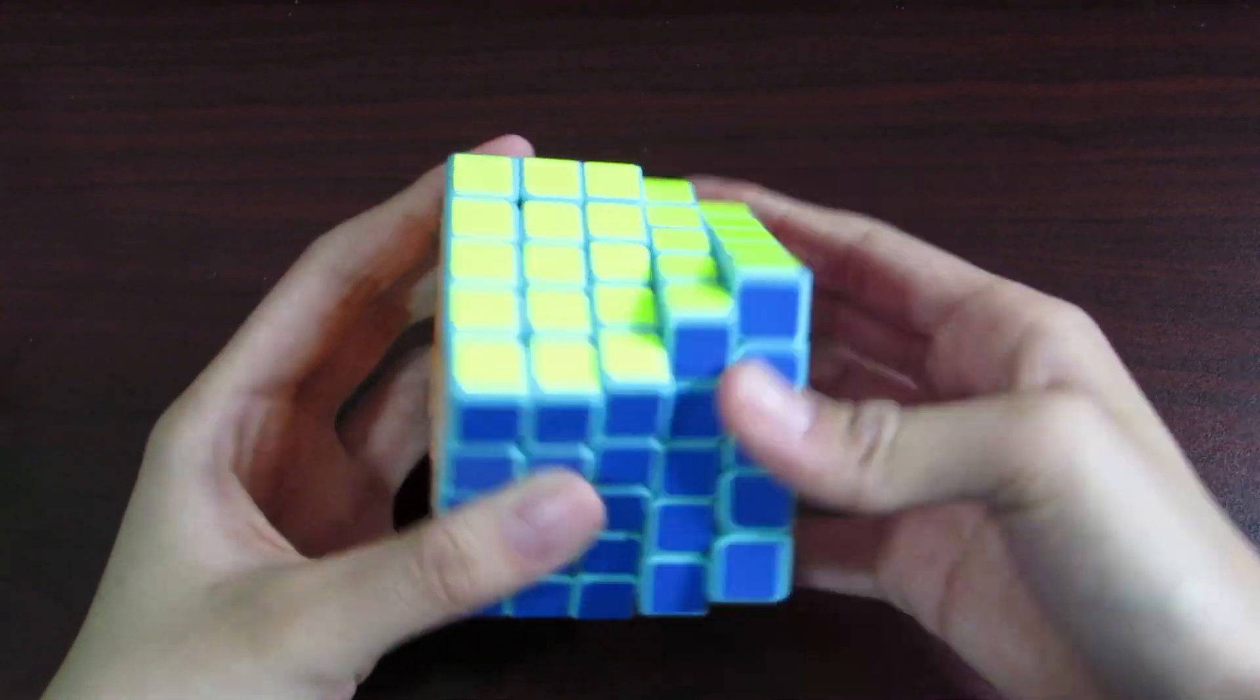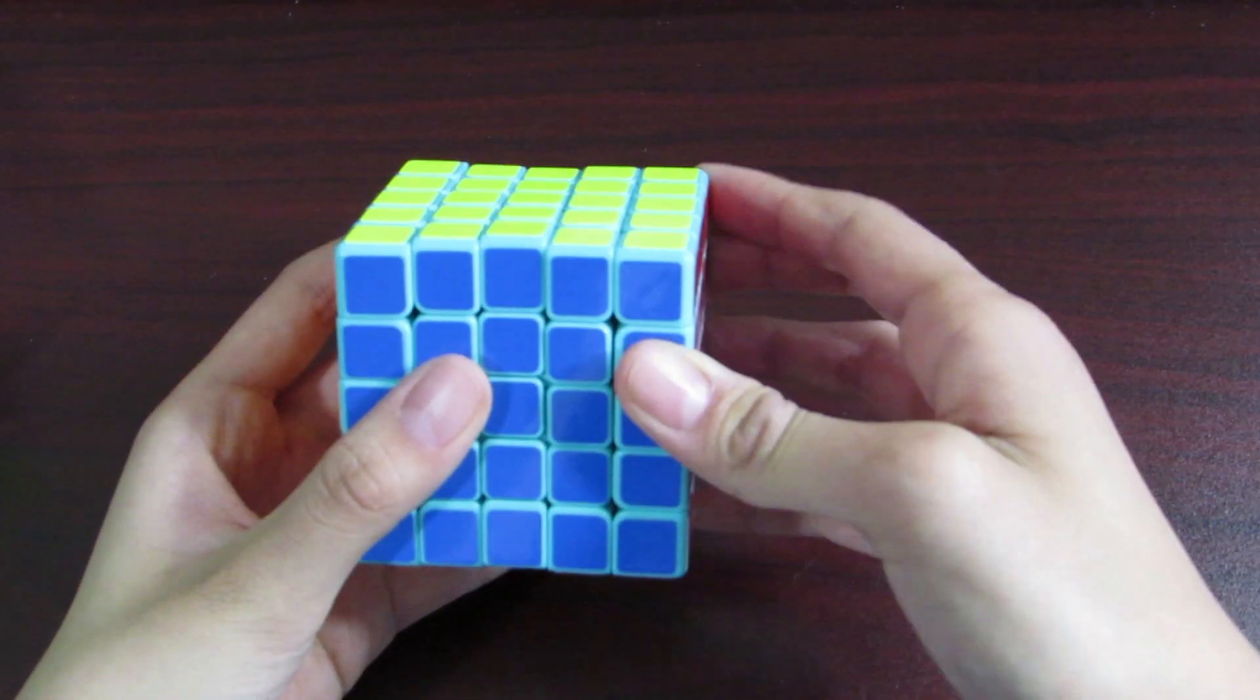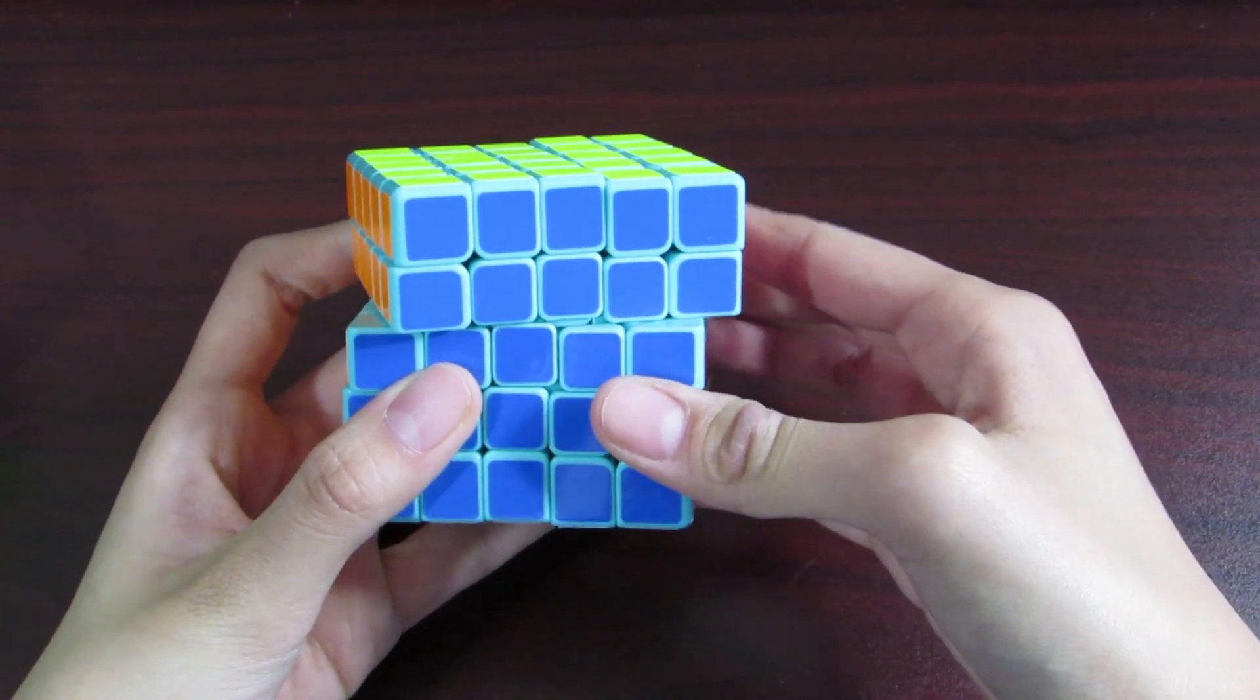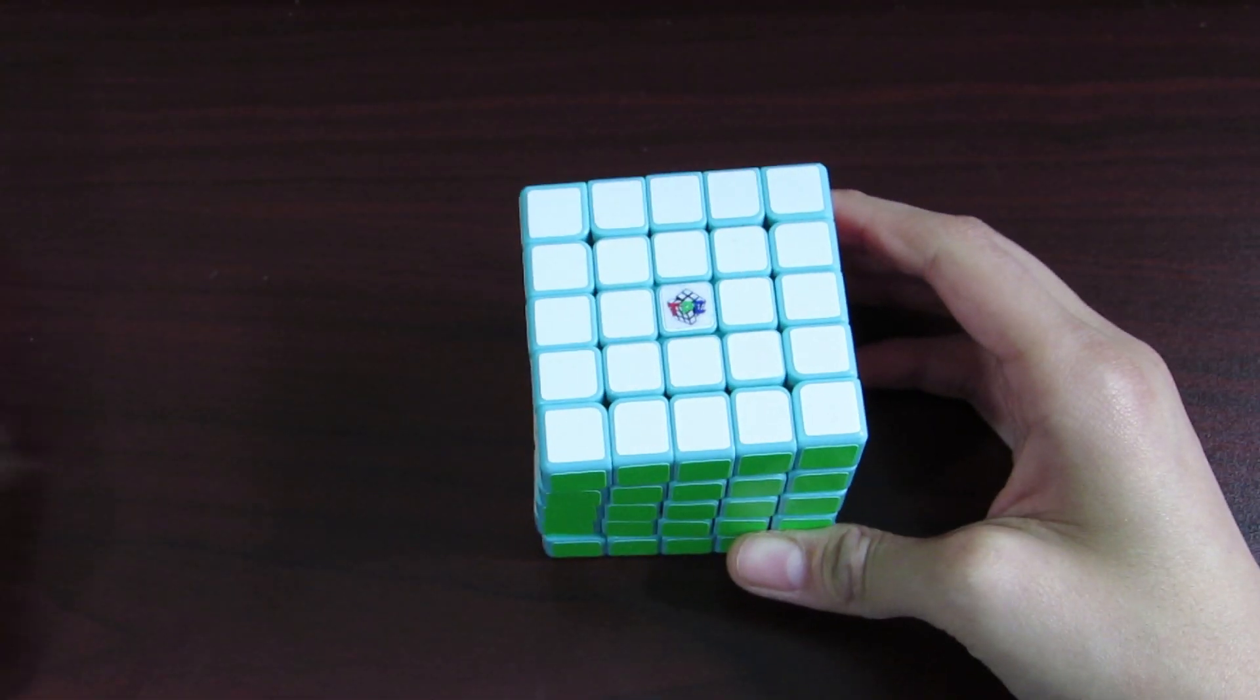But yeah I mean I don't see any flaws with the Bo Chuang so far. Corner cutting I guess is pretty good for a 5x5. I don't exactly know how to judge that. And yeah so that's pretty much it on both of these.